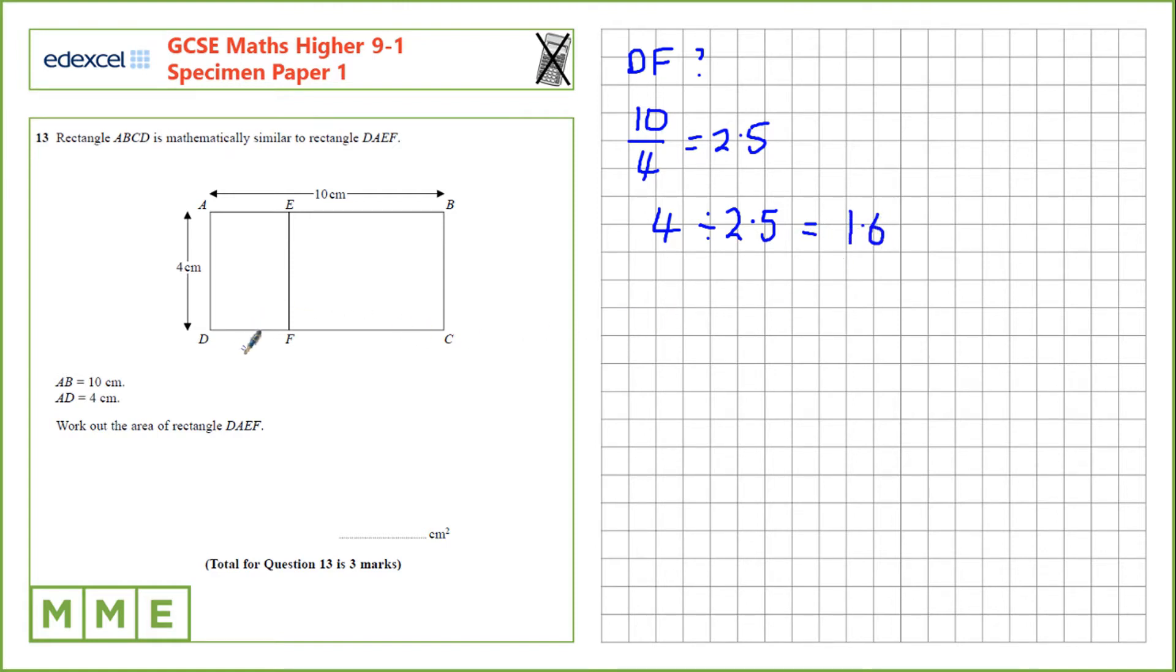Finally we need to calculate the area. We know that this side is 1.6, so the area is 4 times 1.6, which is 2 times 3.2, which is 6.4 centimeters squared.